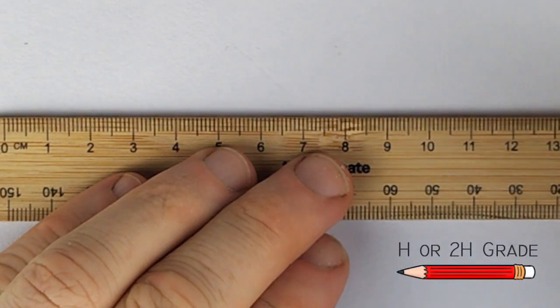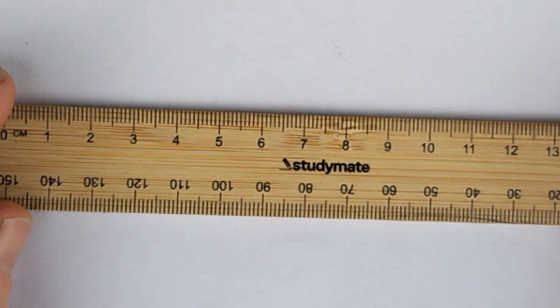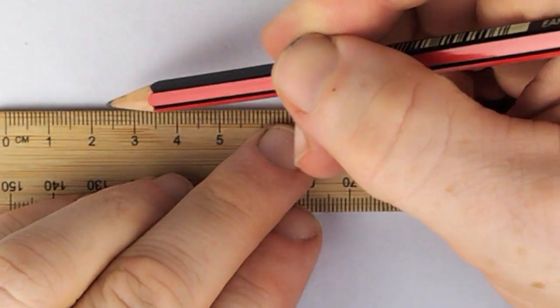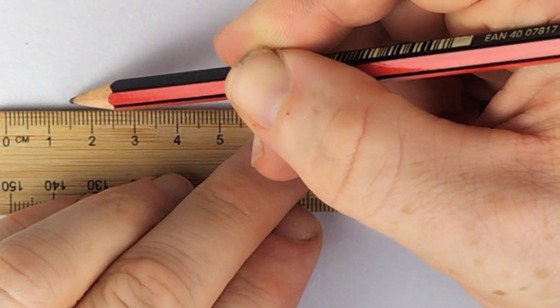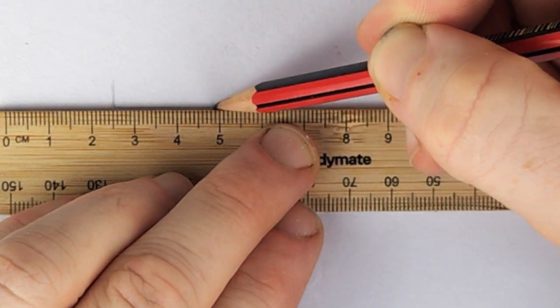First step is to make grid lines to use as a guide for the knotwork. Take your rule and a 2H or H pencil and draw a horizontal line and mark out equal spacings. I'm making out spacings at 2.5 centimeters apart, the same width of the rule.